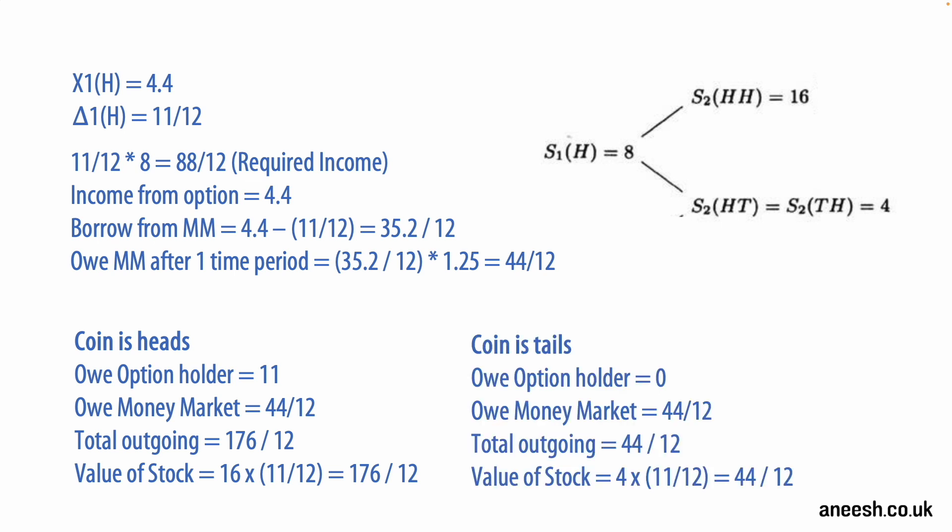If the coin were to result in tails, then the option would not be exercised as the stock price of 4 is below that strike price of 5. Our delta of 11 over 12 will still require us to borrow 35.2 over 12 from the money market, which becomes a debt of 44 over 12 at time period 1. And our delta position of 11 over 12 becomes worth 4 times 11 over 12, which is also 44 over 12. So that means our hedge has also worked where the value of the stock is equal to the debt owed to the money market at time 1.